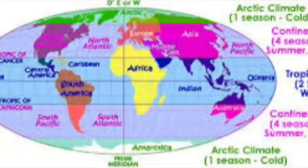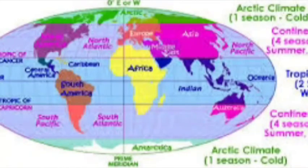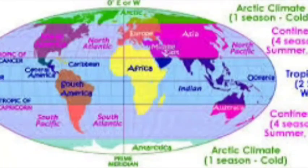Now let's look at the Frigid Zone. The Frigid Zone can also be divided into two parts. The North Frigid Zone lies between the Arctic Circle and the North Pole. The South Frigid Zone lies between the Antarctic Circle and the South Pole. The portion between the South Pole and the Antarctic Circle is known as the South Frigid Zone. It is also very cold.